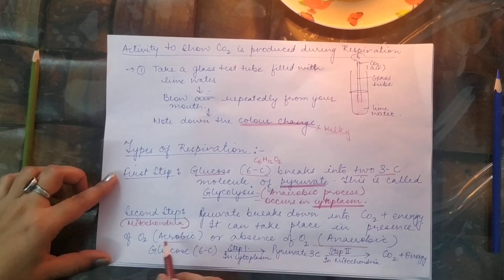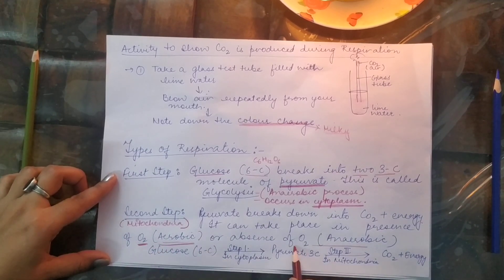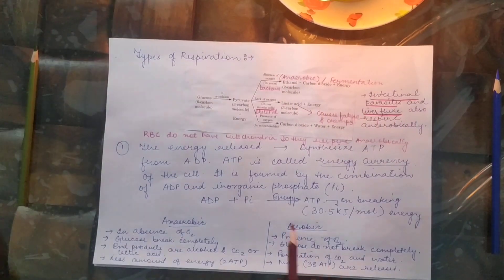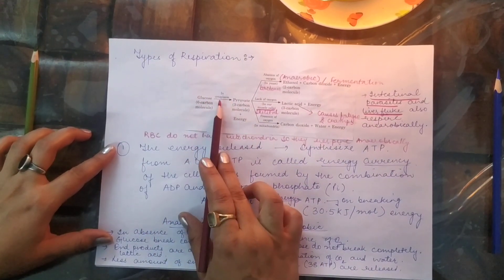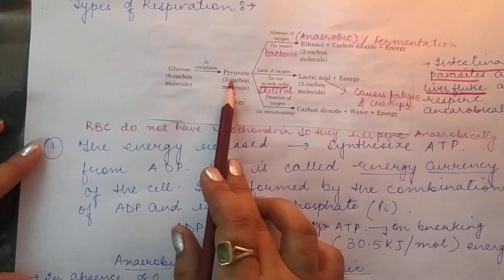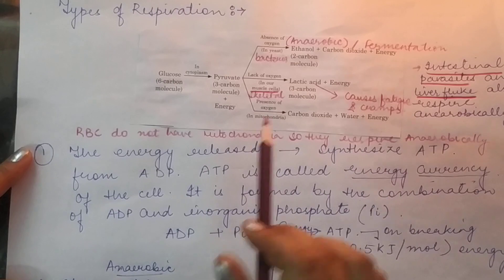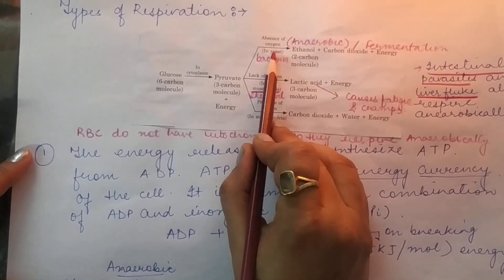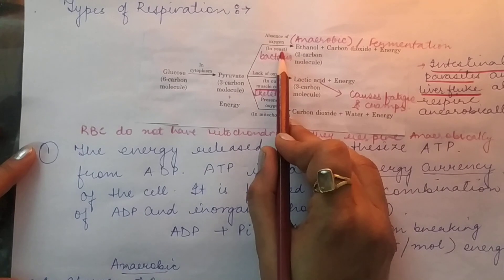The second step involves pyruvate being broken down into CO2 and energy. This step differs in different organisms. In organisms where it is carried out in the presence of oxygen, it is called aerobic respiration; in the absence of oxygen, it is called anaerobic respiration. So glucose, a six-carbon molecule in the cytoplasm, is converted into the three-carbon molecule pyruvate.